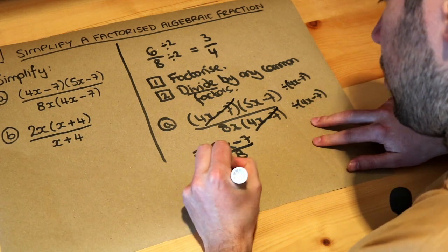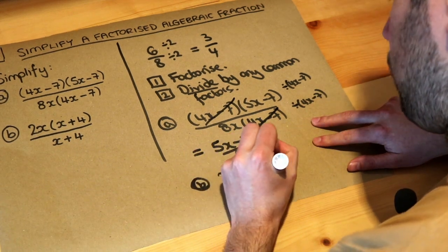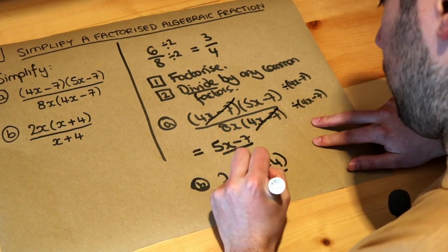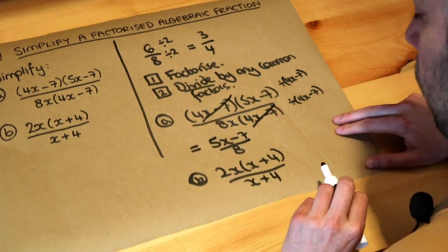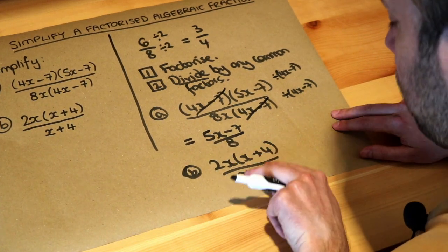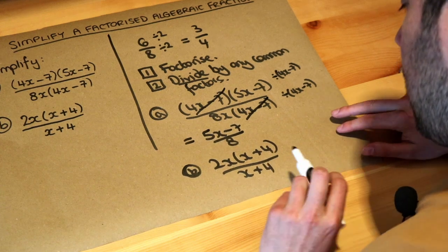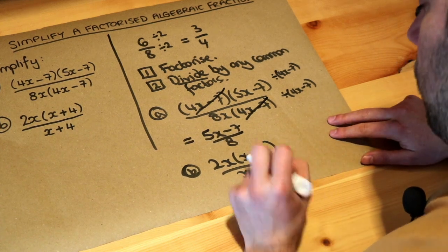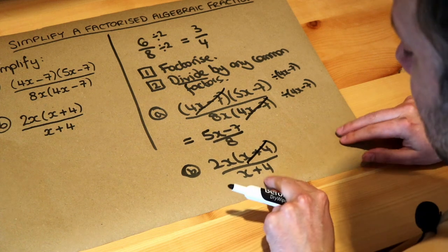And then the second one, 2x(x + 4) over x + 4. Now, what can we divide the top and the bottom by? Well, there's x + 4 at the top and the bottom. So I'm going to divide the top by x + 4, so I can just cross it out. Now, you have to be careful at the bottom.